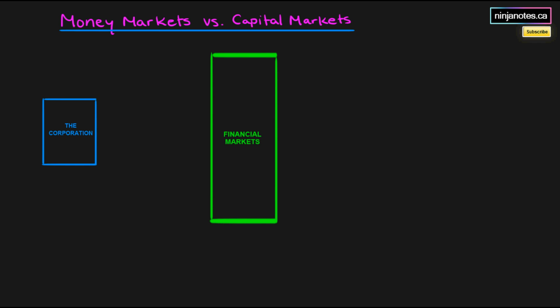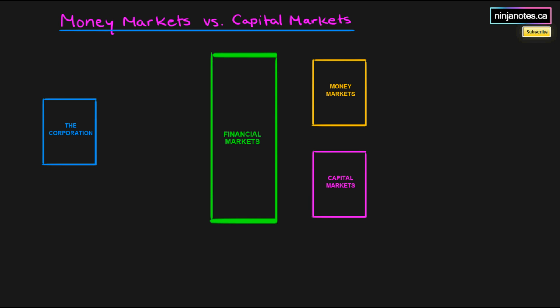There are two different markets within the financial market: the money markets and the capital markets. Together they make up the financial markets as one market. They each have separate products with separate maturities and different attributes, but just remember that these two markets are both together within the financial markets.